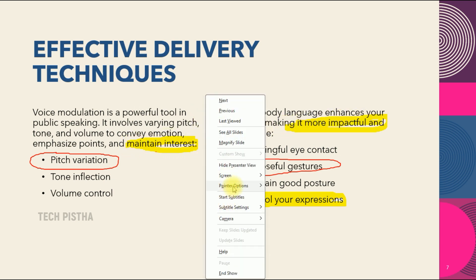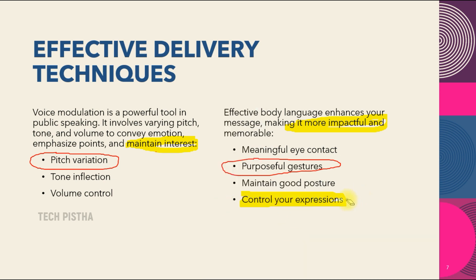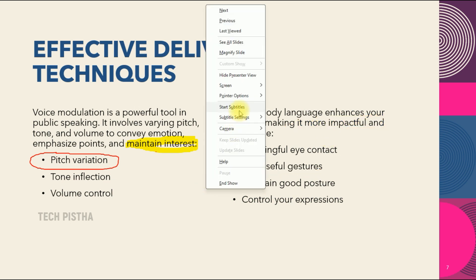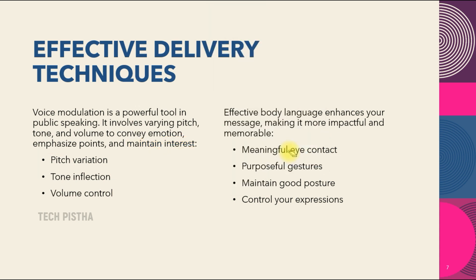You can right-click and go to the pointer option. Under ink color you can choose any color — right now I am using yellow, and this shows the yellow color applied. With the eraser option, if you want to remove a highlight, you can click to erase it, or you can directly erase all ink on the slide to remove everything.